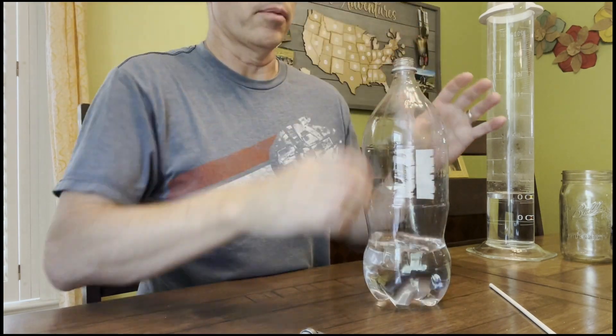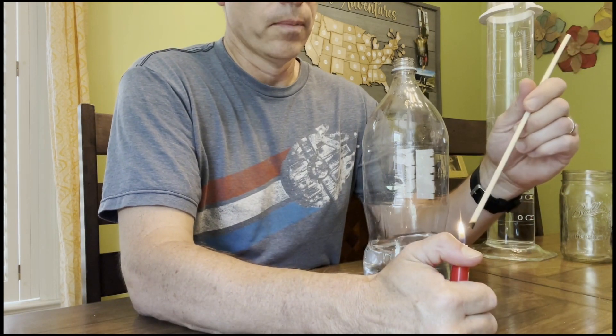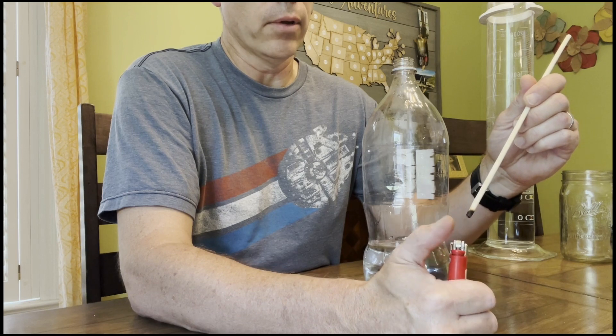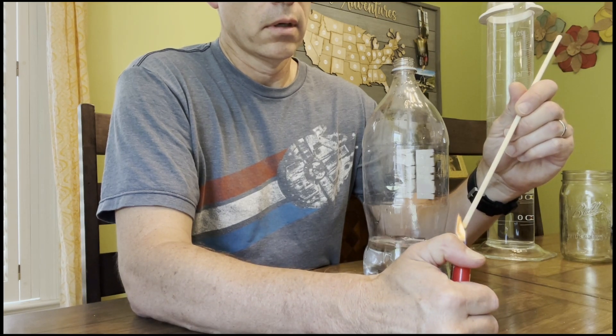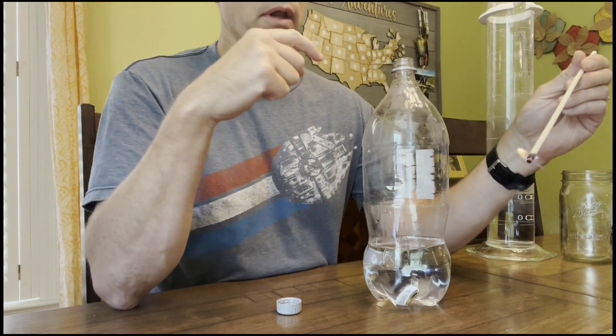Just like before, we need some smoke particles around which those clouds can form. For this, we're going to have this little wooden dowel and we're going to burn that for a moment. We'll use this to add smoke to the inside of the bottle.